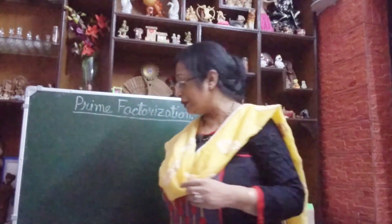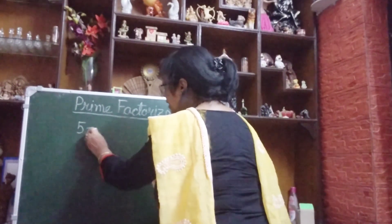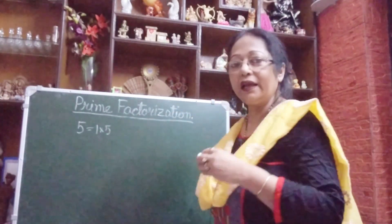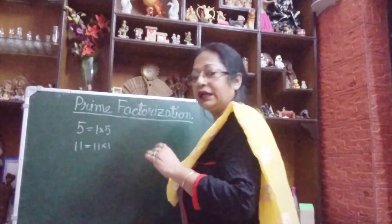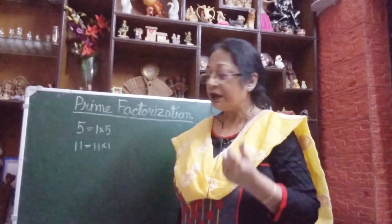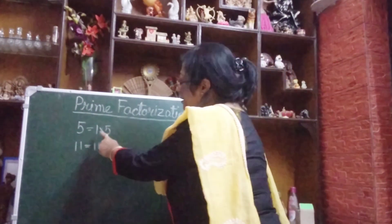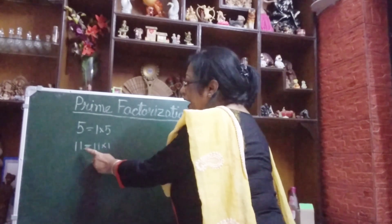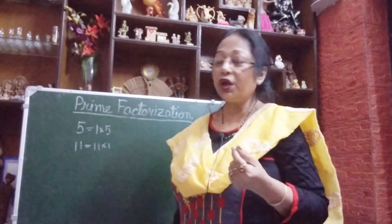Okay, so let's start. First we will tell what are prime numbers — what numbers we call prime numbers. Prime numbers — you see that I am writing here 5. So 5 we can only write as 1 times 5 equals 5. We can't write it in any other table. I am taking 11. So 11 also we write as 11 ones are 11 or 1 times 11. So you see these two examples — these numbers have only two factors, that is 1 and the number itself. These types of numbers are called prime numbers.